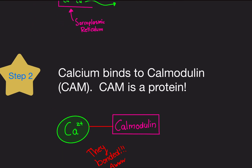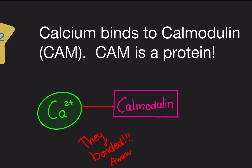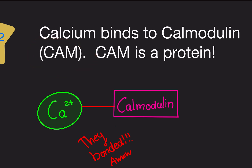Step two. In skeletal muscles, calcium sprinkles onto troponin and pushes tropomyosin away. But in smooth muscle there are some additional initial steps. First, calcium must bind to something called calmodulin — abbreviated as CaM. Calcium binds to calmodulin and they bond together, essentially forming a complex.